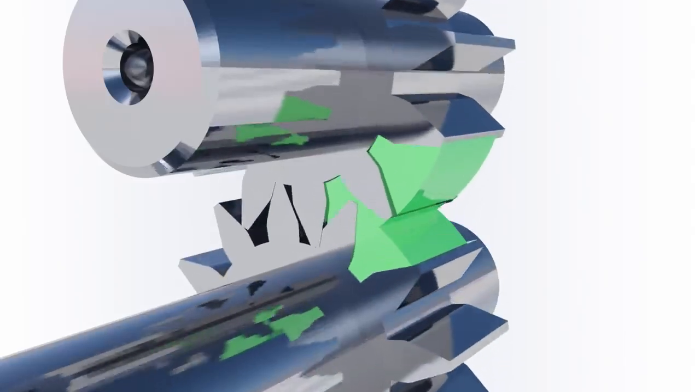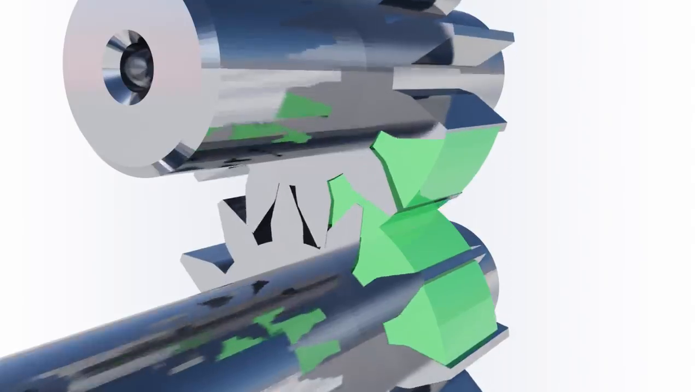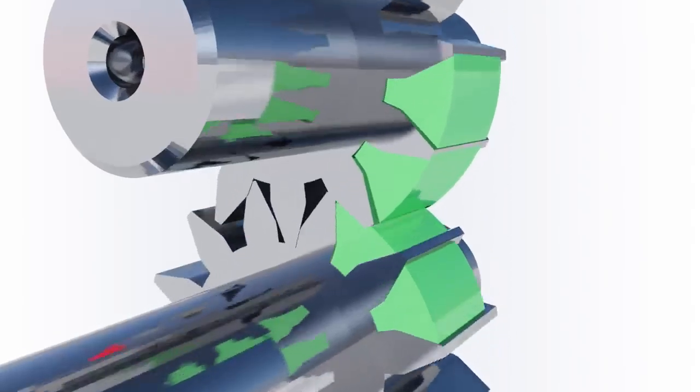When the gear teeth come out of the mesh, additional volume is formed. And when they go into the mesh, this volume decreases.